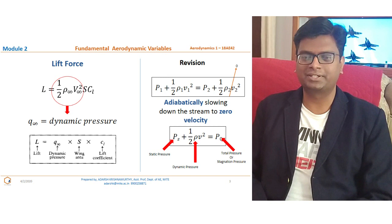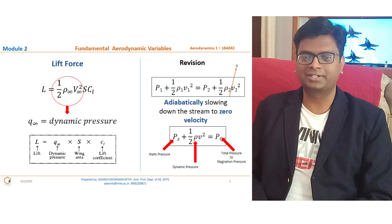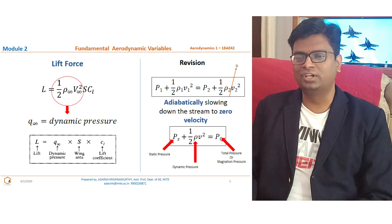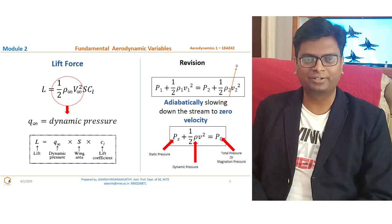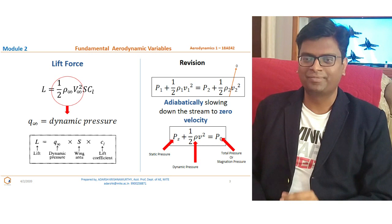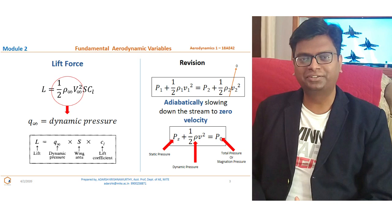If I transform half rho V squared into dynamic pressure — I call it q infinity — then lift can be written as q S CL, where q is the dynamic pressure, S is the planform area, and CL is the coefficient of lift. A quick revision: the sum of pressure energy and kinetic energy remains constant, that is p plus half rho V squared equals constant.